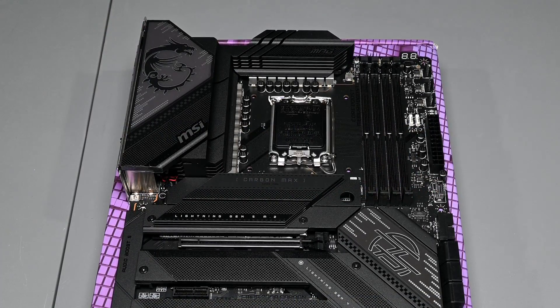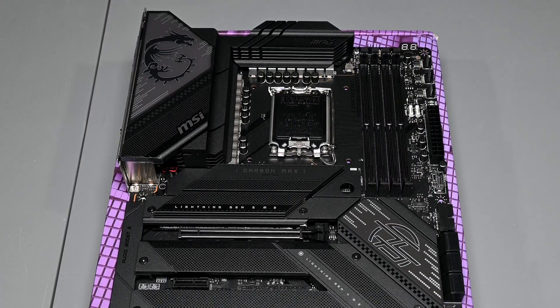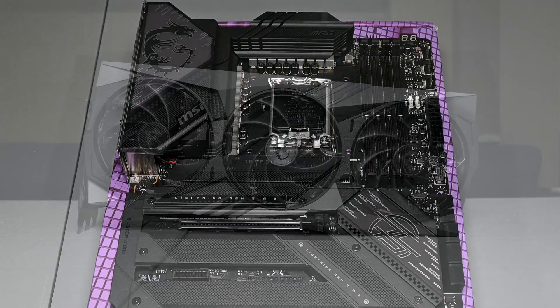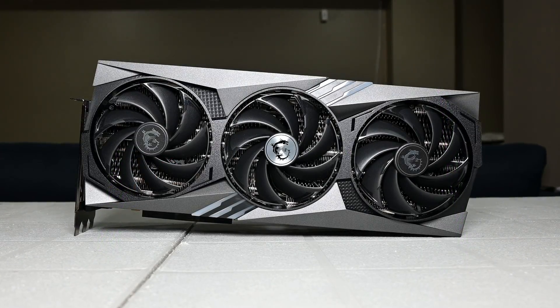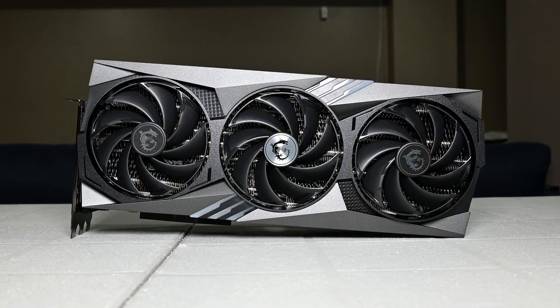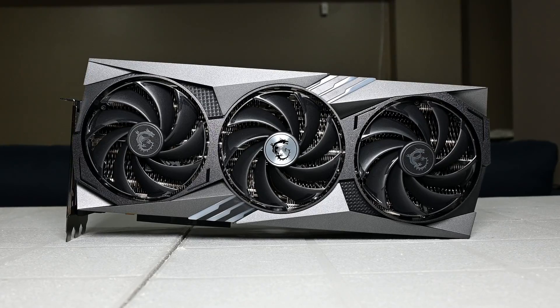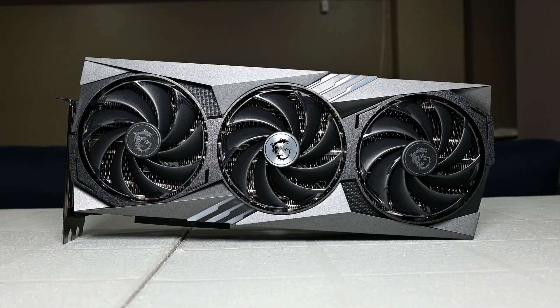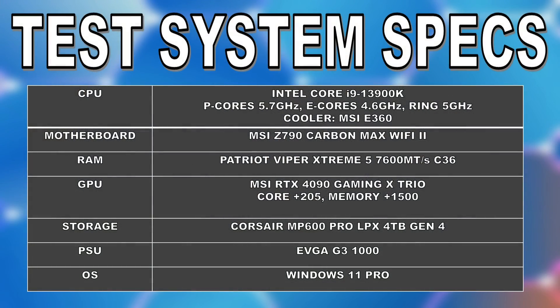The motherboard is an MSI Z790 Carbon Max Wi-Fi 2. For the GPU, we have an MSI RTX 4090 with a +205 offset to its core and +1500 to the memory. For the rest of the system specs, check the video description. I've also done several OS tweaks involving changes to the power plan, core parking policies, and more — so keep in mind this is not a system configured out of the box, but one that has been tuned quite extensively.